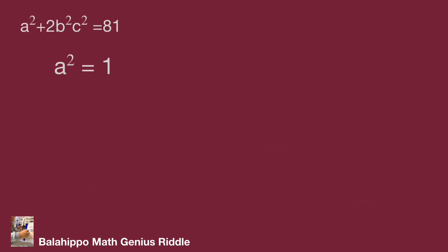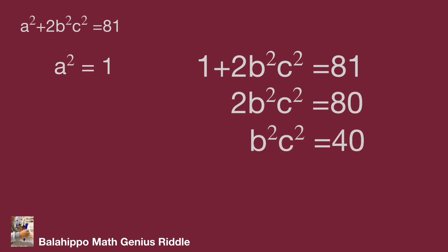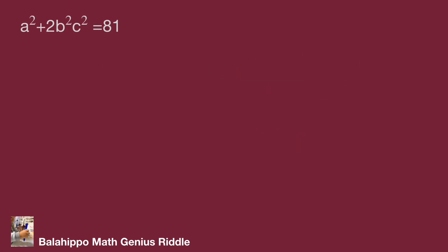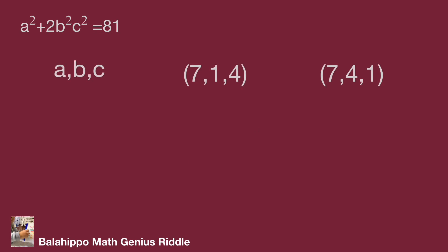If a squared equals 1, the same operation gives b squared times c squared equal to 40, which also cannot be satisfied by positive integers. The answer is false. In summary, the valid (a, b, c) answer groups are 7, 1, 4 and 7, 4, 1 and 3, 1, 6 and 3, 6, 1. That's the result. Did you find it? Hope you enjoy the video. Thank you.